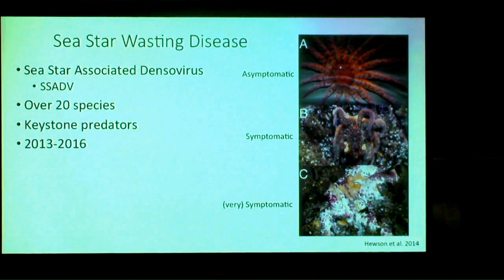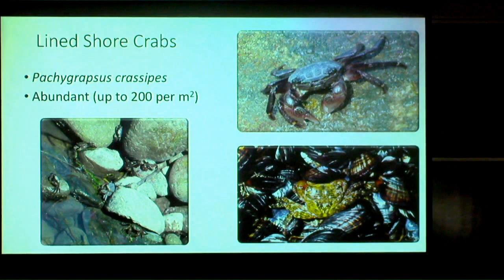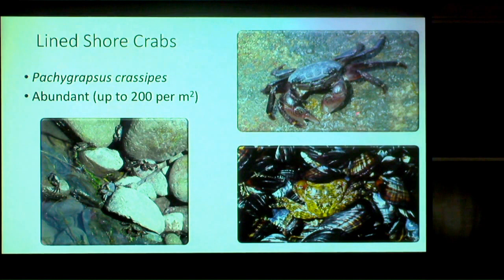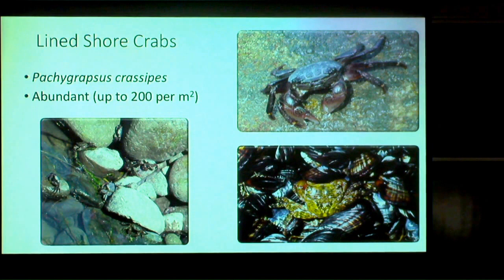One species we switched to was the lined shore crab, Pachygrapsus crassipes — and this photo is just down in Moss Landing. They're all over the place here at densities of hundreds per square meter. They're generally considered herbivorous because you see them scraping microalgae off the rocks or pulling pieces of Ulva seaweed out of the water. They'll occasionally scavenge on something dead, but they aren't really known to be predators. But we had them in the lab for an unrelated experiment and they ate a few juvenile mussels.